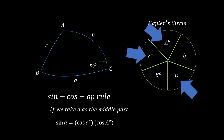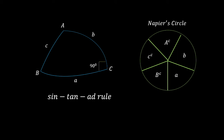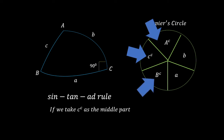Now let's move on to the sin-tan-adjacent rule. This rule states that the sine of the chosen middle part is equal to the product of the tangents of its adjacent parts. Let's take c-complement as the middle part — its adjacent parts are b-complement and a-complement. Applying the sin-tan-adjacent rule: sin(c-complement) is equal to the product of the tangent of the adjacent parts, which is tan(a-complement) × tan(b-complement).